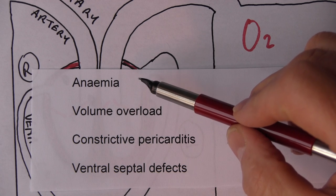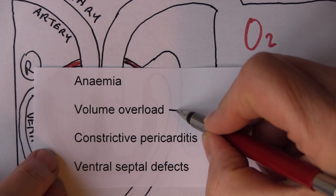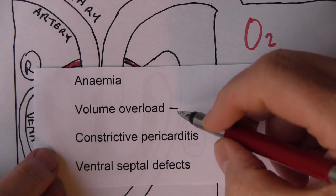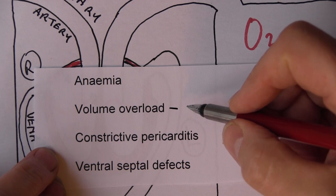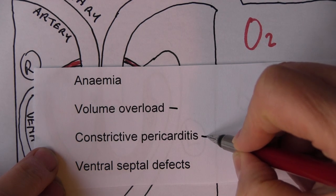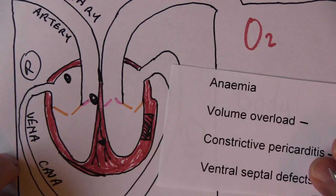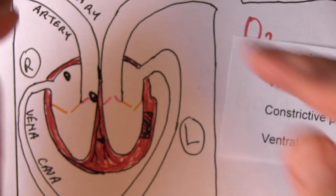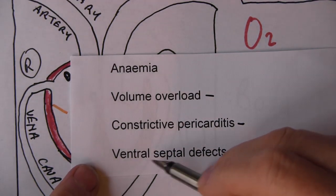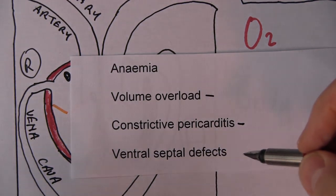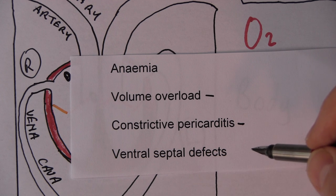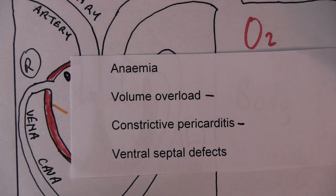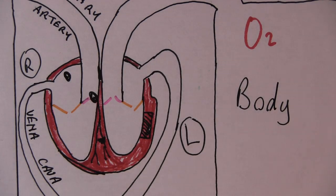A few other causes to bear in mind: if someone is fluid overloaded, we must be careful with heart disease patients in hospital because giving too much fluid can send them into acute pulmonary oedema. Constrictive pericarditis is also a possibility — the pericardium is the layer around the heart. Congenital defects such as ventricular septal defect or patent ductus arteriosus — things people are born with due to inappropriate changes at birth — are also causes of left ventricular failure.